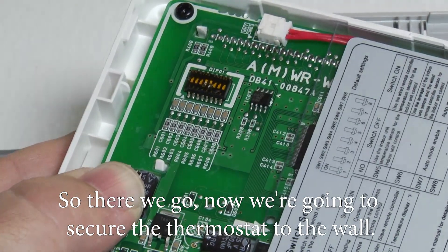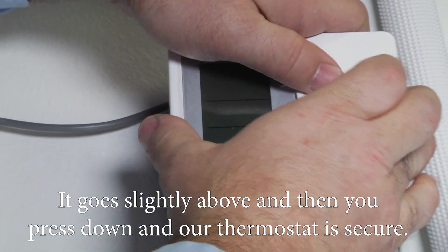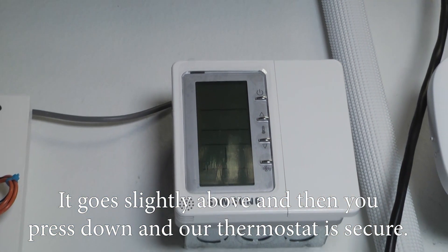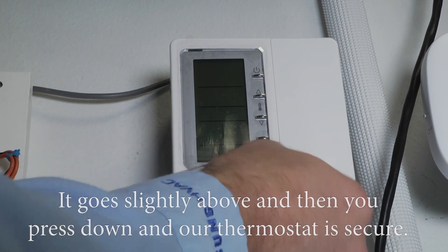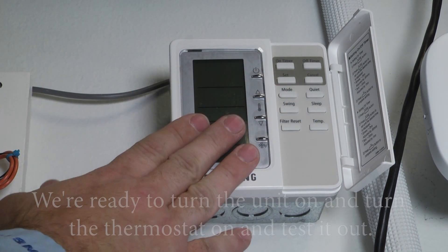Now we're going to secure the thermostat to the wall. Flip it back around. It goes slightly above. And then you press down. And our thermostat is secure. We're ready to turn the unit on and turn the thermostat on and test it out.